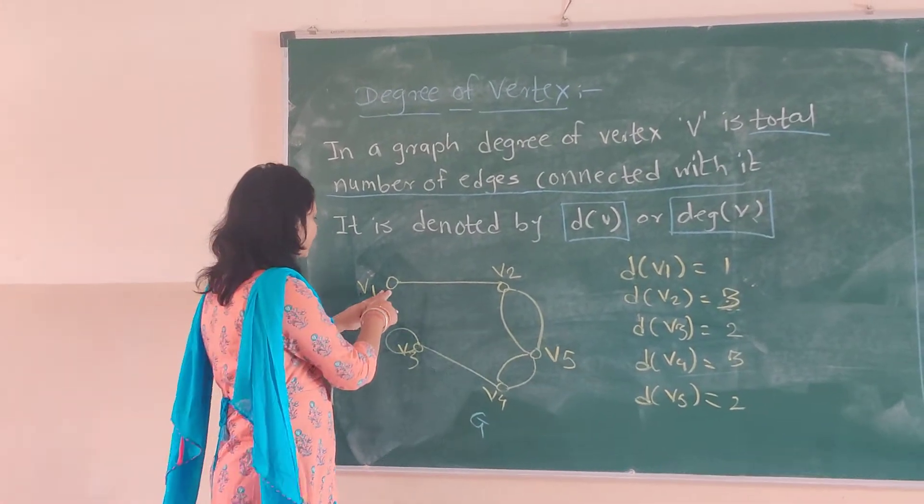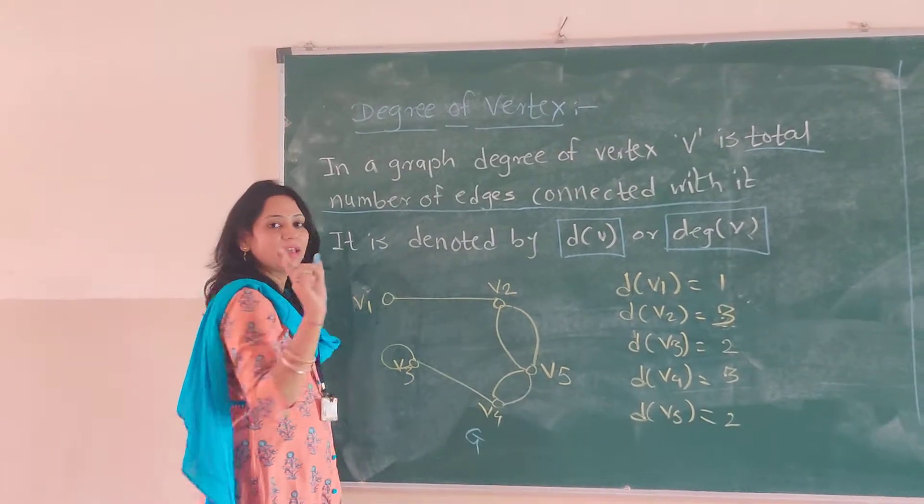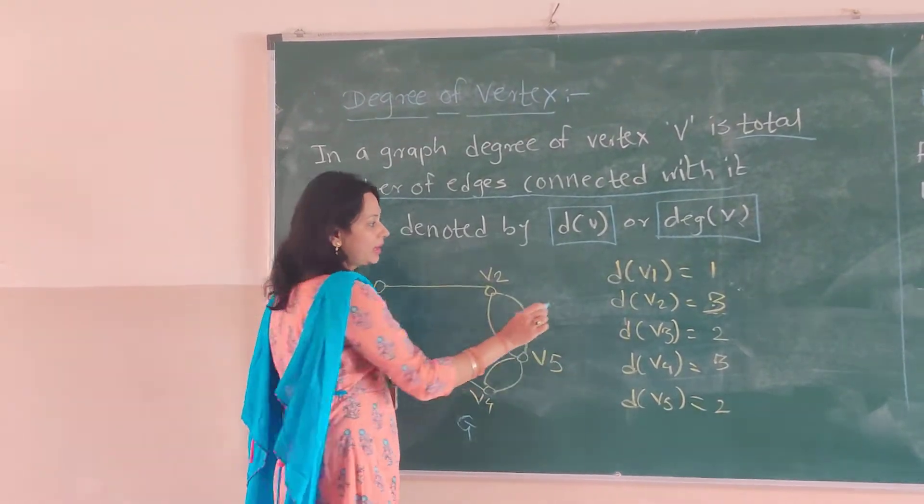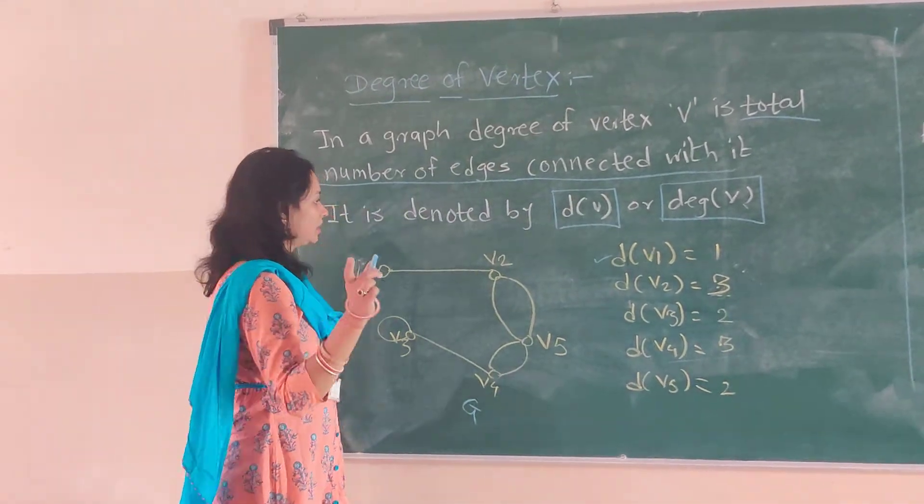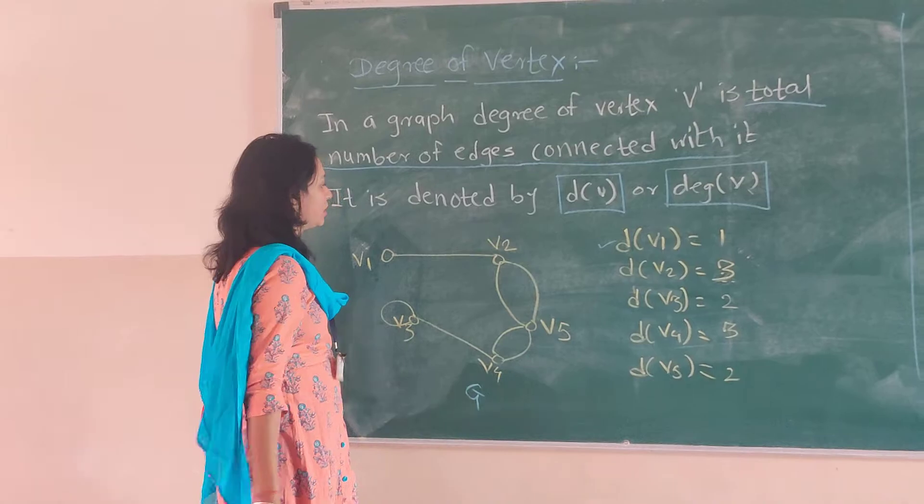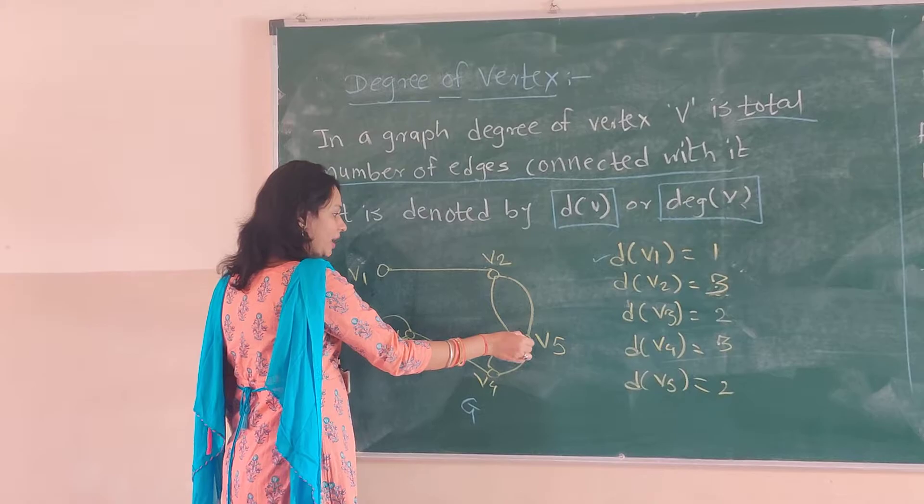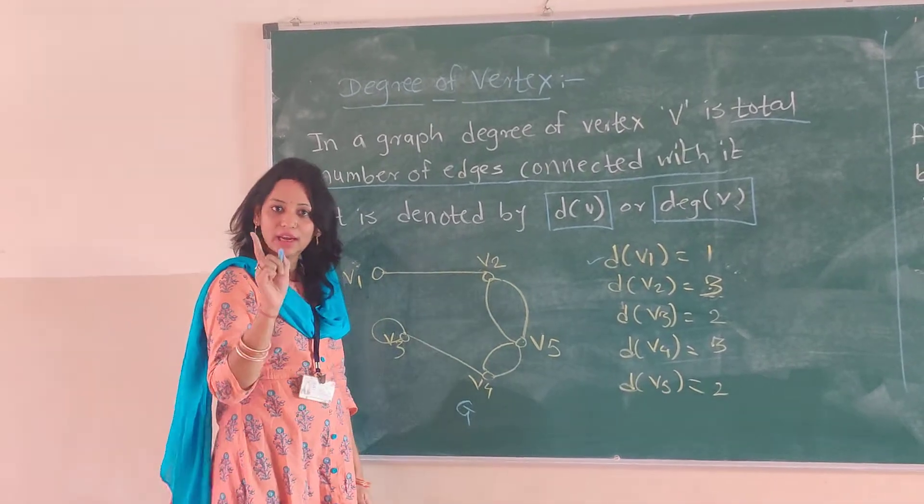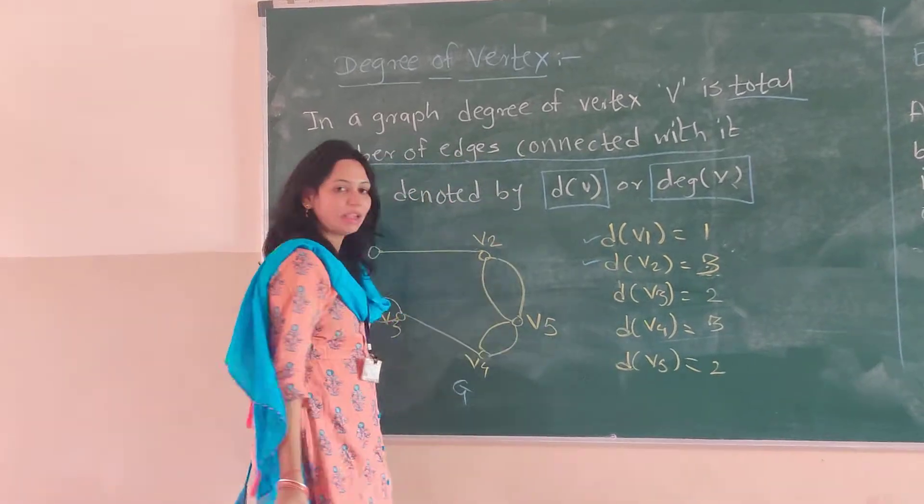For V1, we can see only one edge is connected. That's why degree of V1 is 1. Then comes V2. This edge 1, this 2, and this 3 - three edges are connected. So the degree of V2 is 3.